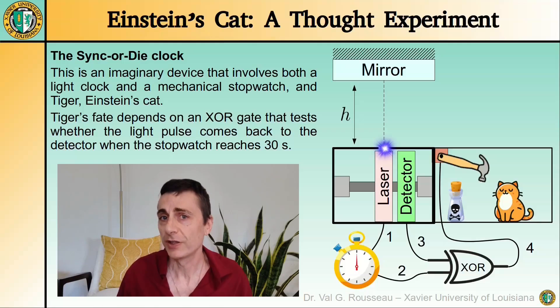When the stopwatch is started, it triggers a light pulse and starts counting to 30 seconds. If the light pulse returns to the detector when the stopwatch reaches 30 seconds, nothing happens, but if the two clocks disagree,